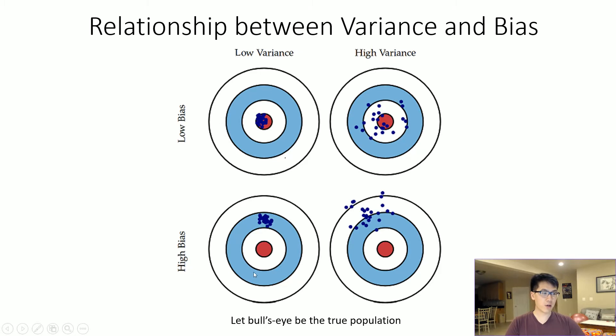We have low variance, high bias—where all points are close to each other but far from the red bullseye. And high variance, high bias—where points are spread out from each other and far from the bullseye.